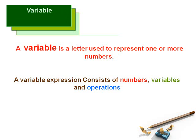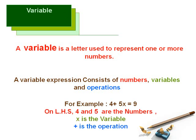An example should clarify the concept. In this equation, 4 plus 5x equals 9: 4 and 5 are numbers, x is a variable, and plus is the operation. So, 4 plus 5x is a variable expression.